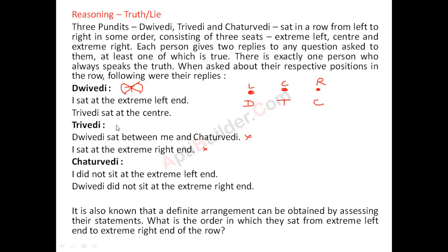Let's assume Trivedi is making both truth statements. Trivedi is saying D sat between me and C. D is sitting between T and C, and T is sitting at the extreme right end, so T is here and C is here. Checking the other two statements: I sat at the extreme left end — this is false. And T sat at the center — this is also false. So this person cannot be the one making both true statements.